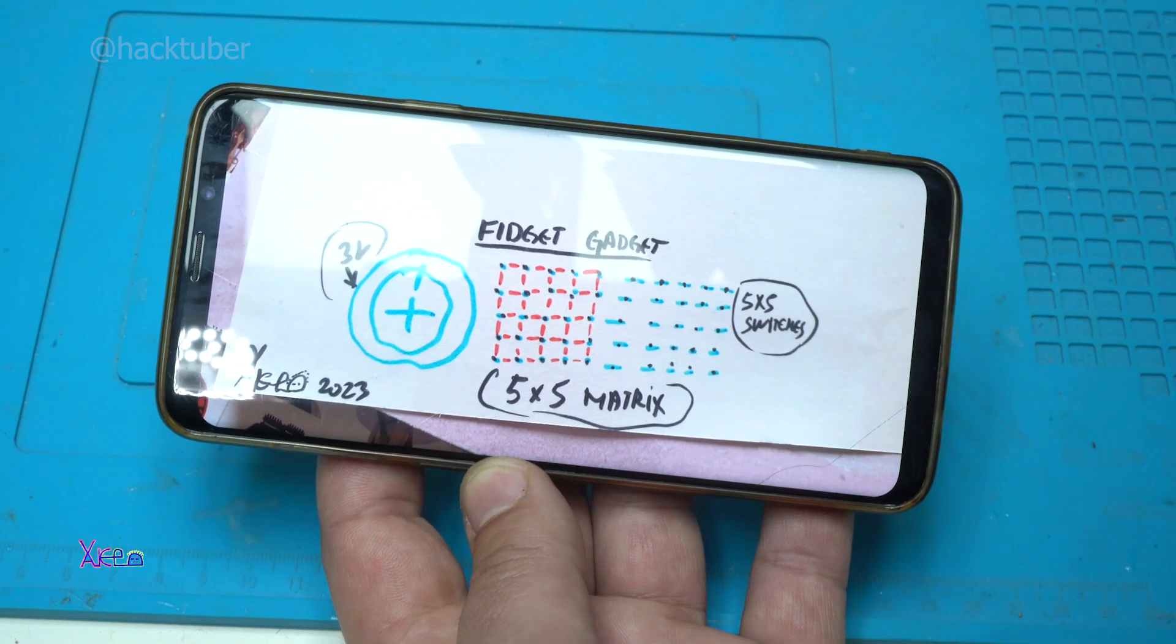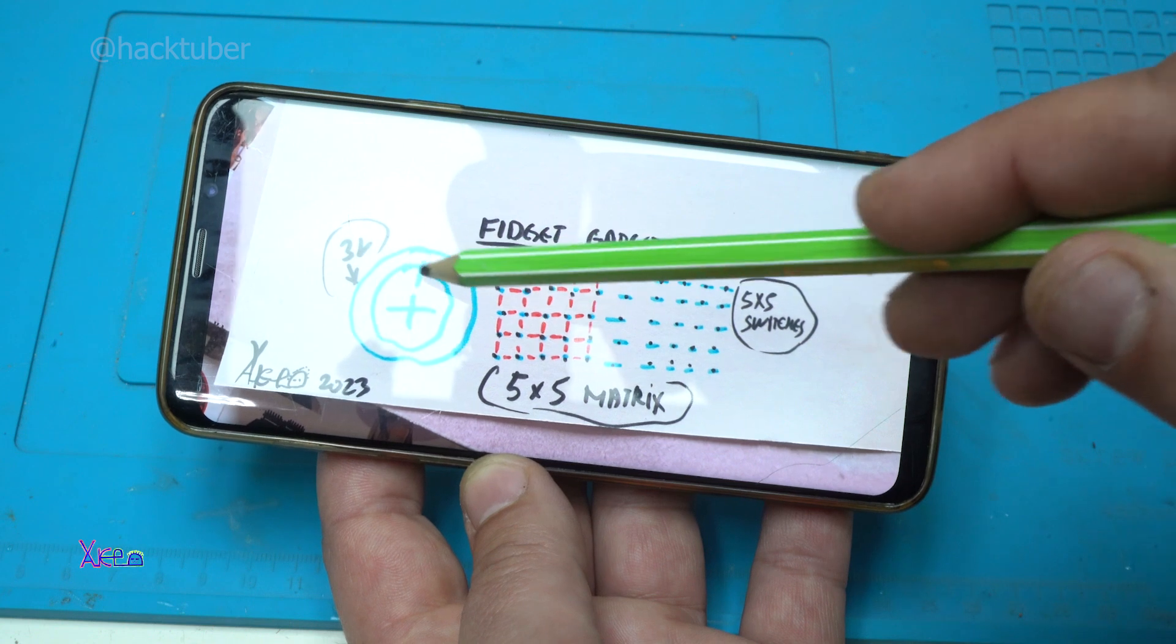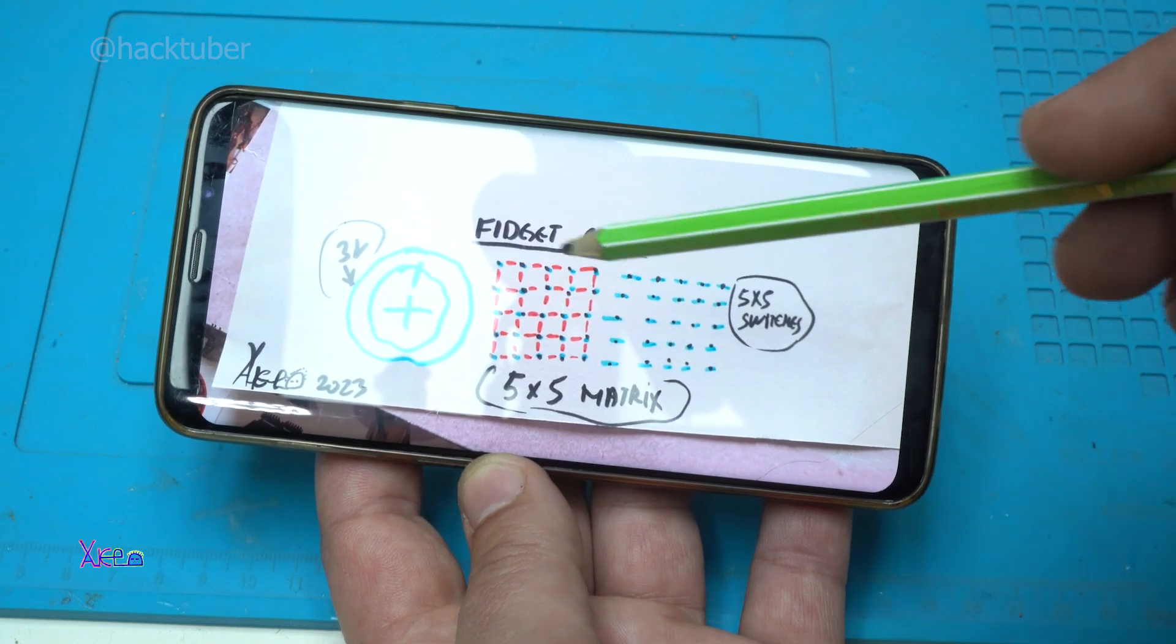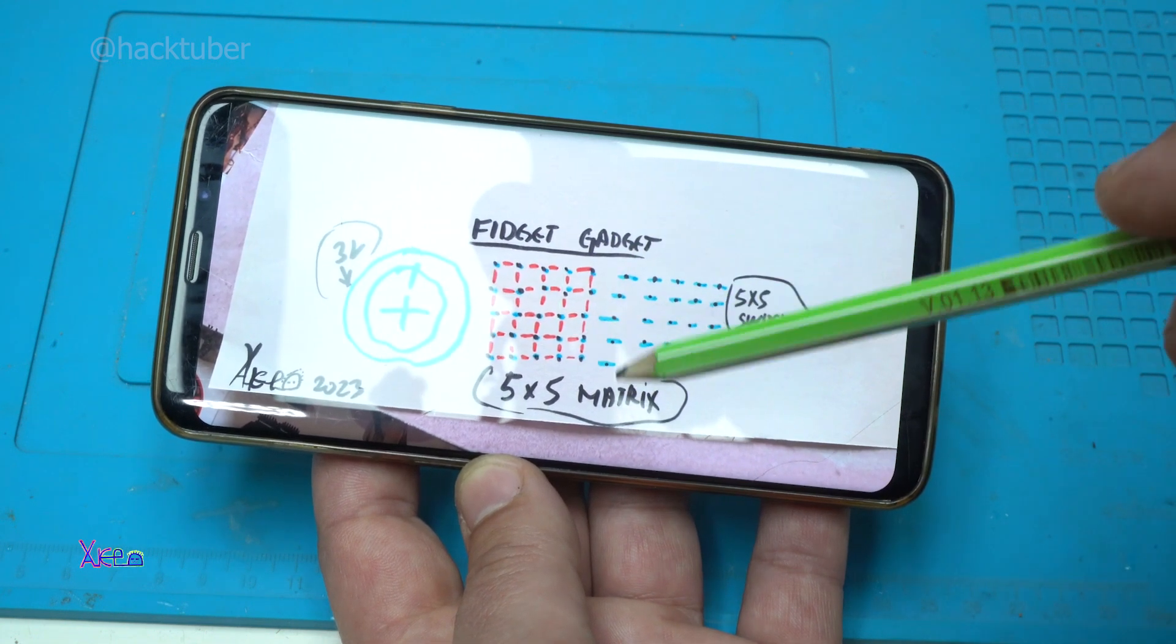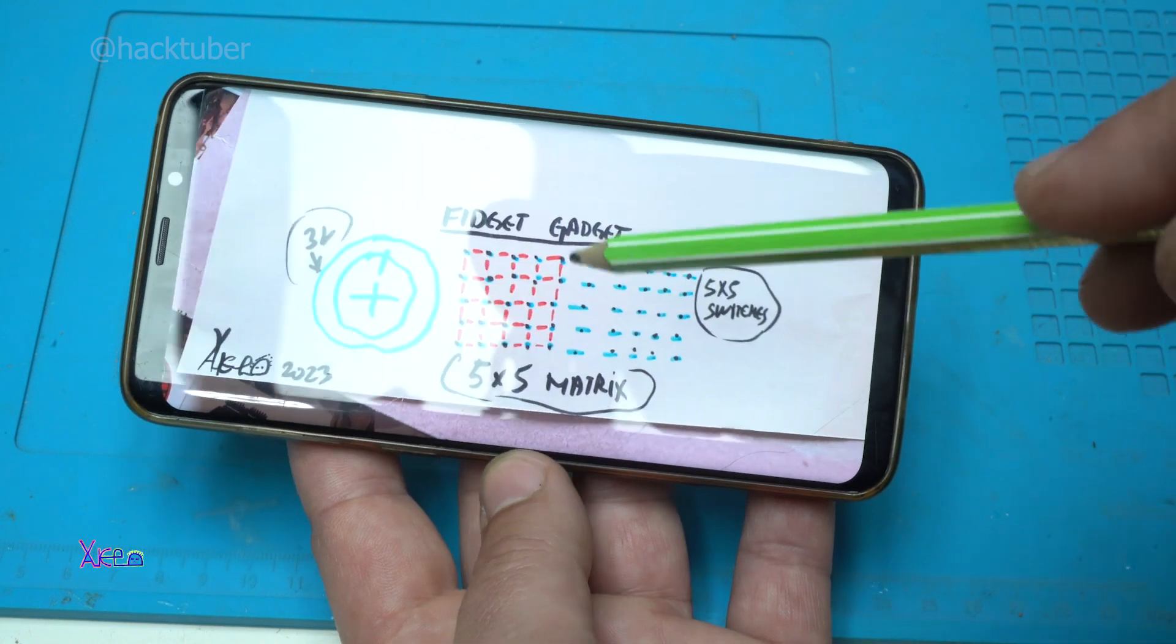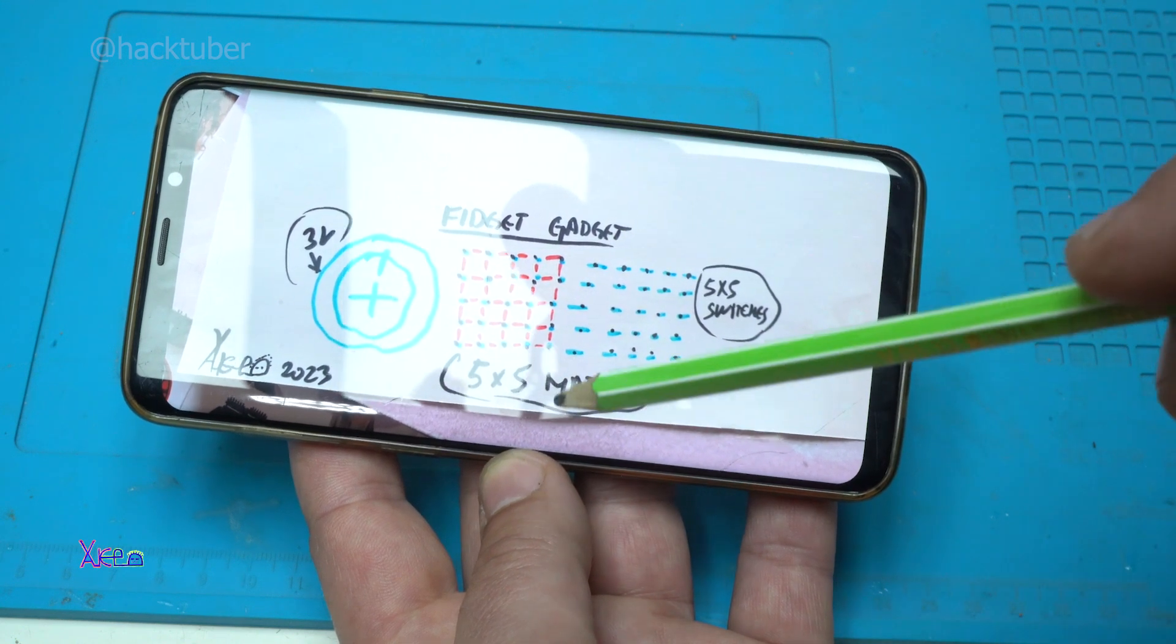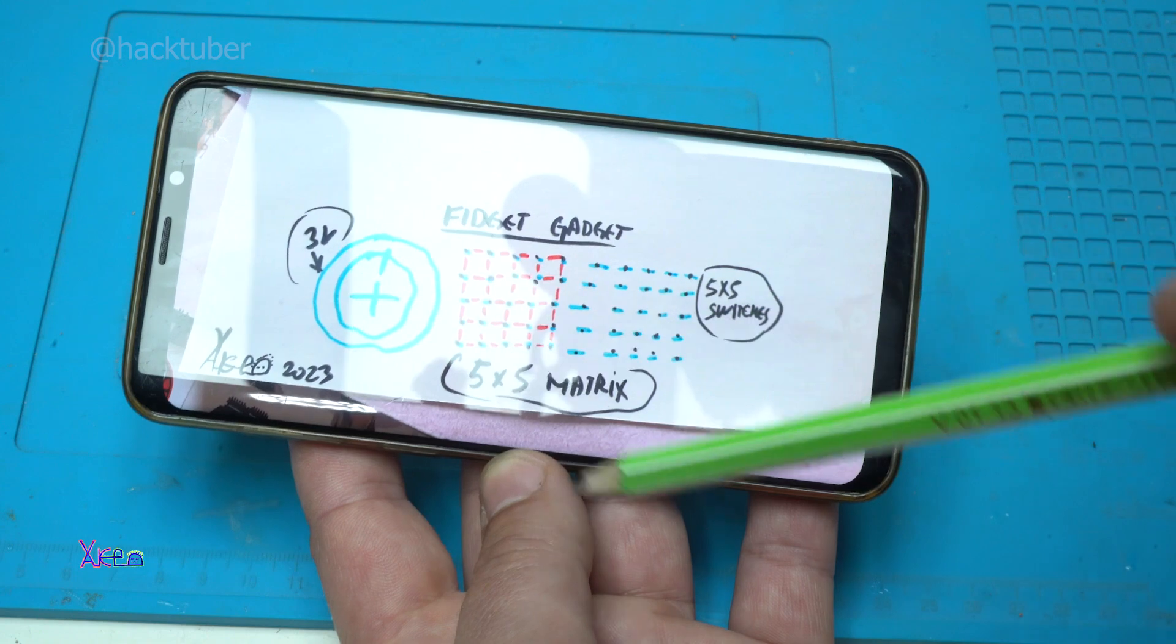Here is the first plan that I wrote on paper. Here is the 3V coin battery. Here will be 5x5 LEDs, 3mm, 25 LEDs, also 25 micro switches for controlling the LEDs, plus one switch for the main power.